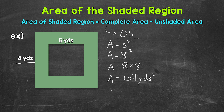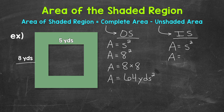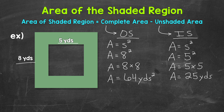Now we need to subtract the area of the smaller square — we need to take out the square hole, so to speak. Let's put IS for inside square. This is the unshaded area. This is a square, so we can square a side length to find the area. All of the sides of that unshaded square are 5 yards. So let's plug in 5 yards: 5 squared means 5 times 5. That gives us an area of 25 square yards.